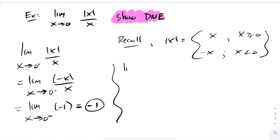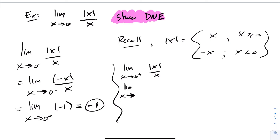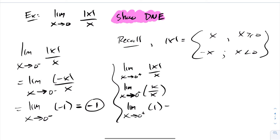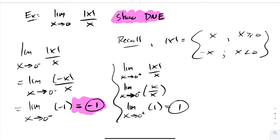If I take the limit as x goes to 0 from the right-hand side of |x|/x, I'm inputting positive values, so I can drop the absolute value. This becomes x over x. The x's cancel, giving us 1. So as I approach 0 from the left I get negative 1, and from the right I get 1 — different values — so the limit does not exist.